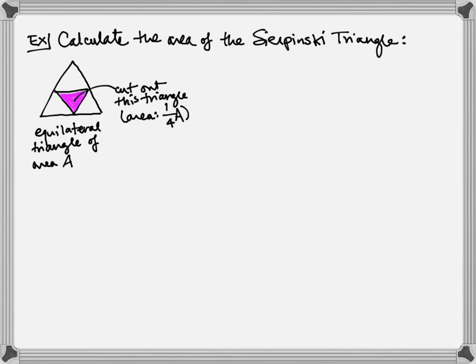The area of that guy is one-fourth of my total area A. So if I stop at this point and I calculate area, my new area is going to be three-fourths A, because I'm taking A and I'm subtracting a fourth from it.